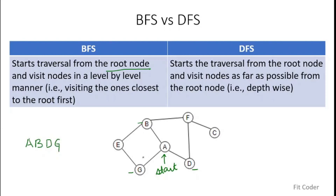In the next round, we will traverse all the nodes that are at distance 2. The distance 2 nodes are E and F. So we will write E and F, and at the end the last node is at distance 3. So this is the BFS traversal for this graph.